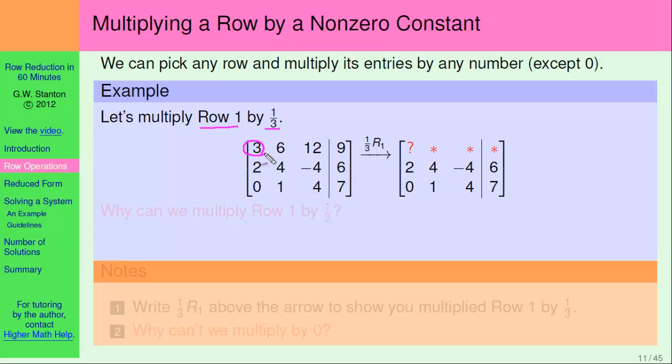Three times one-third, what will that end up being over here? That gives us a one. And similarly, the next entry is a six, so we multiply that by one-third, and we get two, and then twelve times one-third is four, and nine times one-third is three.